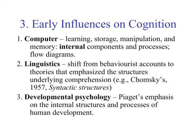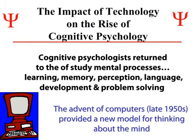In linguistics, there was a shift from behaviorist accounts to theories emphasizing structure underlying comprehension. Chomsky's 1957 book 'Syntactic Structures' was key here. In developmental psychology, Piaget emphasized cognitive structures — internal structures and processes with respect to human development. Technology has a way of impacting society and the way we think about things, and so was the case with the advent of the computer in the late 1950s, which provided a new model for thinking about how the mind operated.